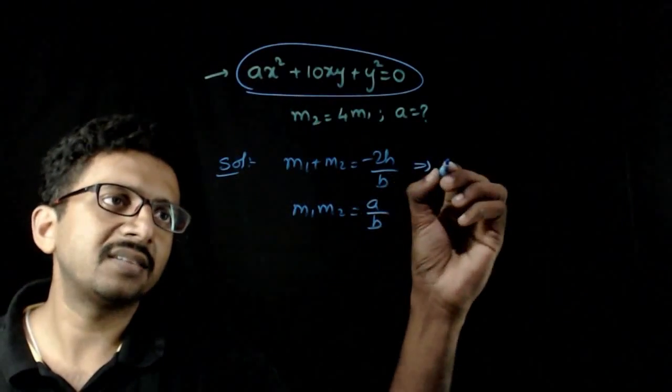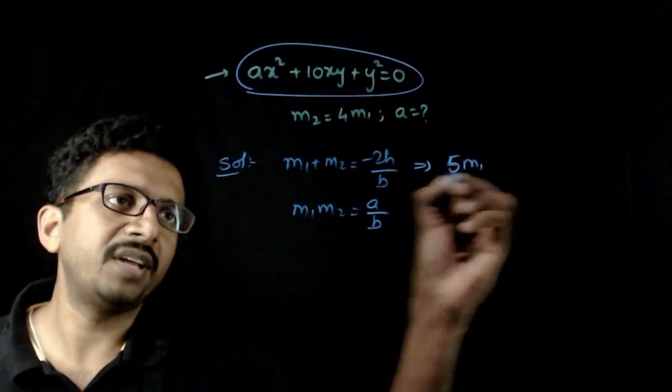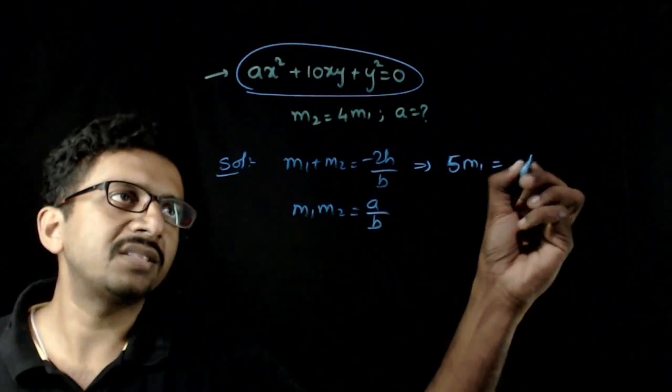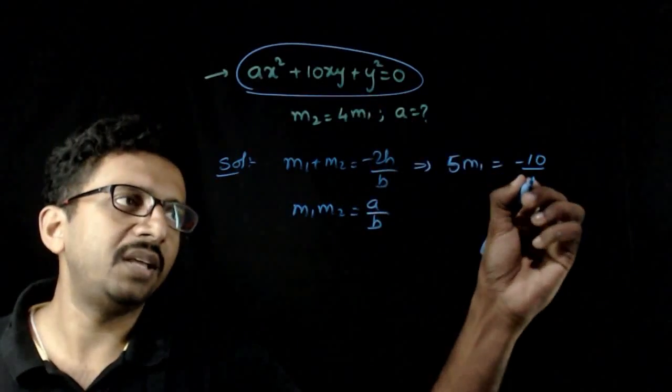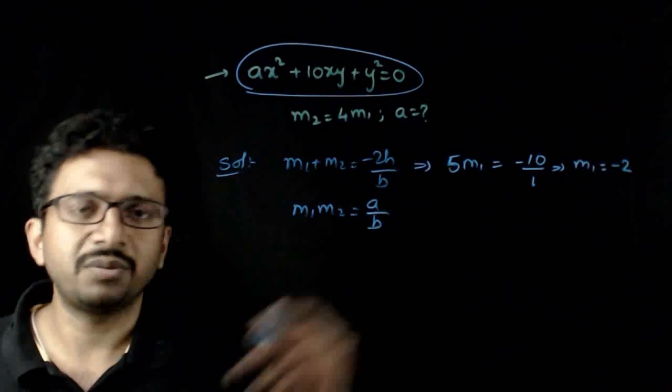This implies m₂ is equal to 4m₁, so m₁ + 4m₁ = 5m₁ is equal to -10/1, since 2h is 10 and b is 1. This implies m₁ is equal to -10/5, which is -2.